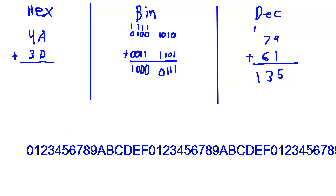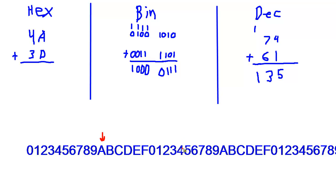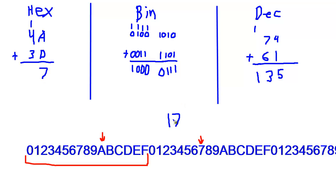We position ourselves at A, and we need to move forward D places: 1, 2, 3, 4, 5, 6, 7, 8, 9, A, B, C, D — that puts us at 7 in the next group. We've rolled over the 0-through-F range, which is a normal carry. So 7 is our resulting hex digit for the ones place, and we carry the 1. Then 4 plus 3 plus the carry of 1 is 8. So our hex answer is 87.